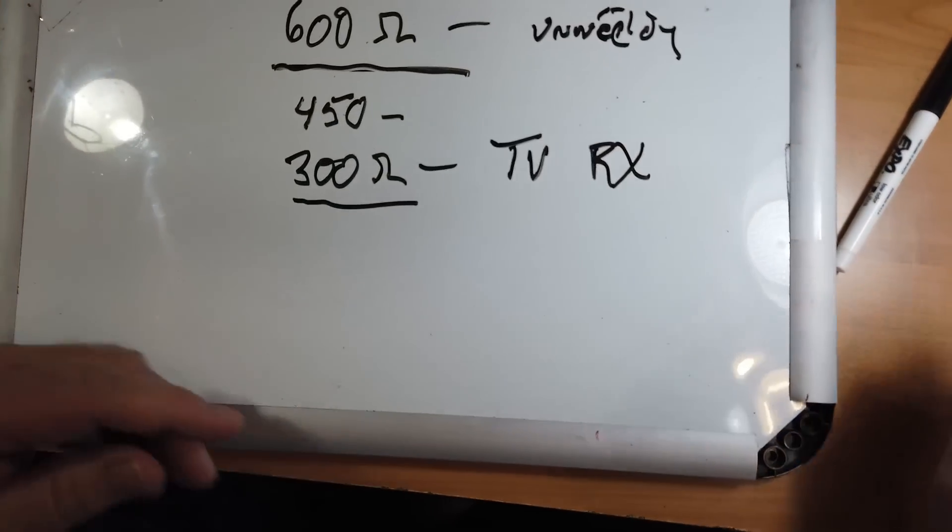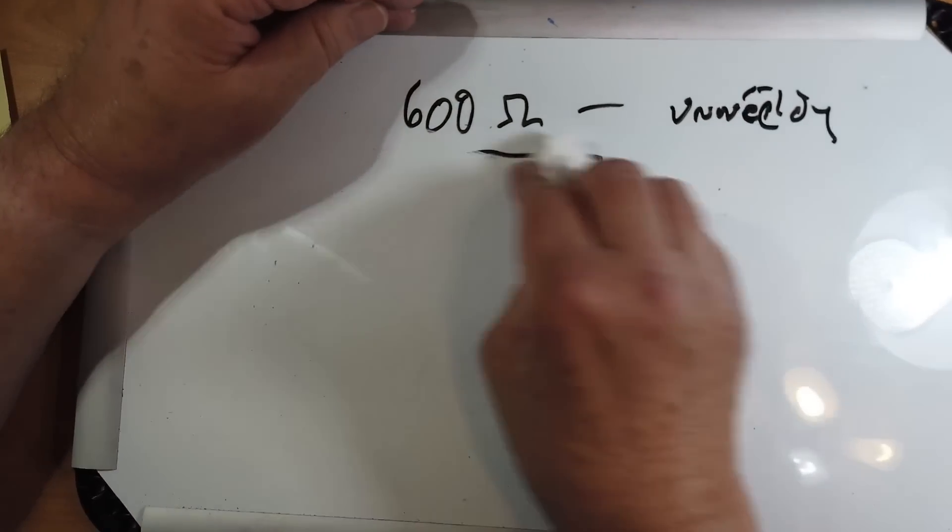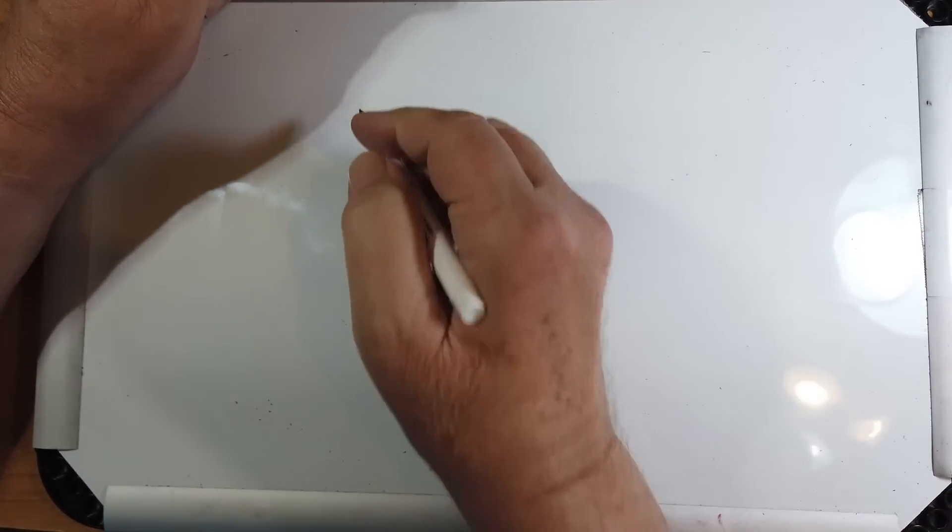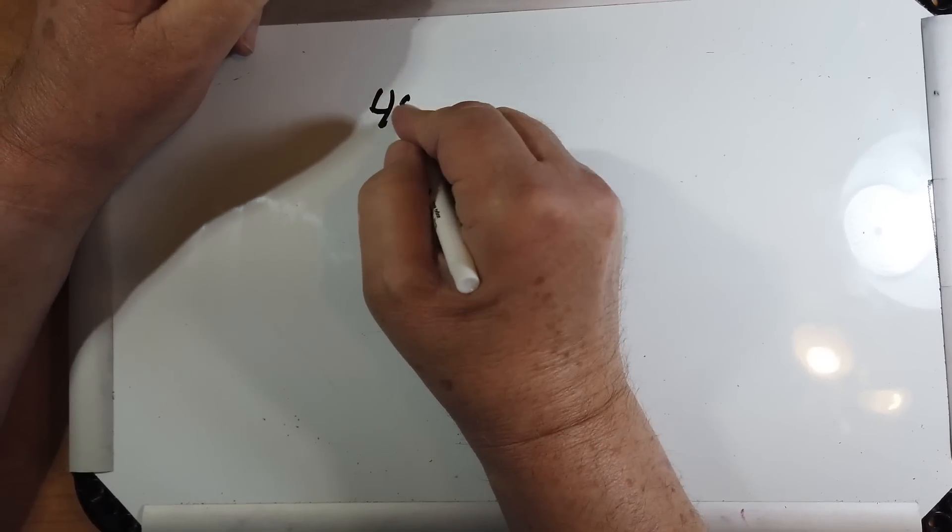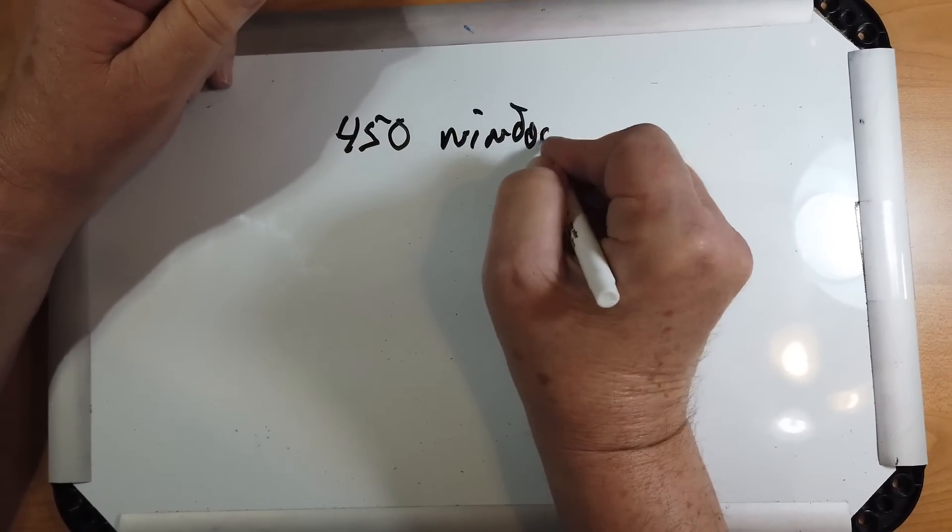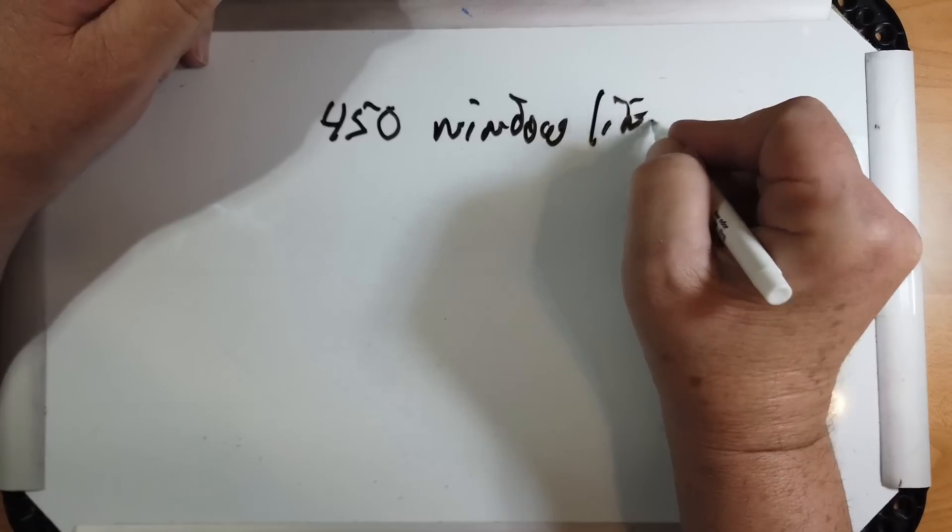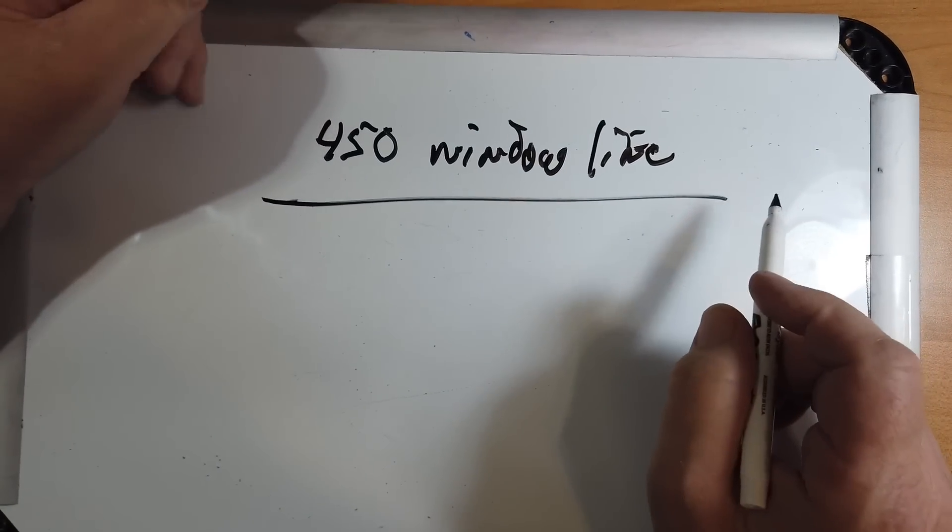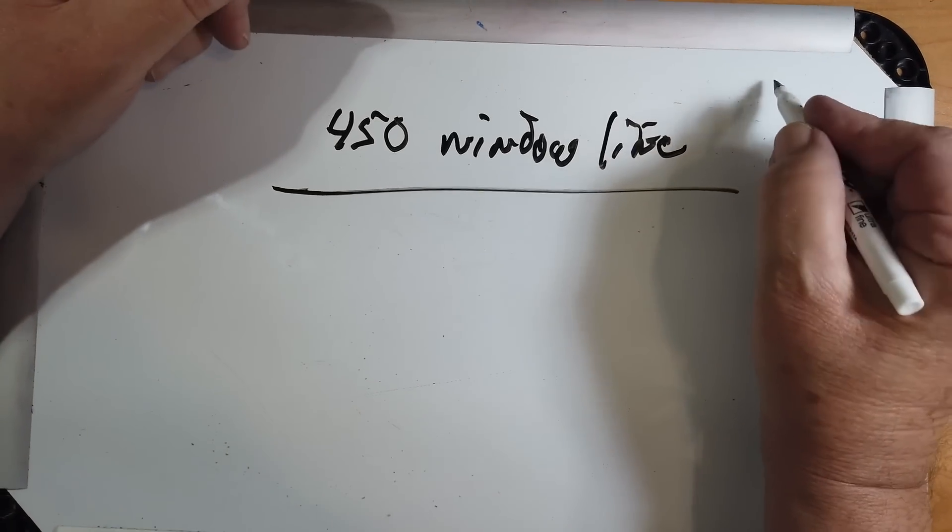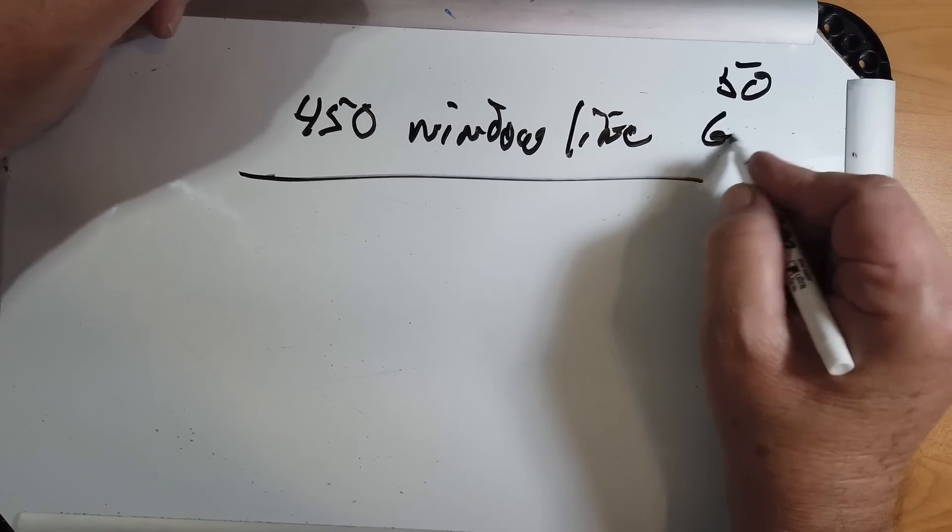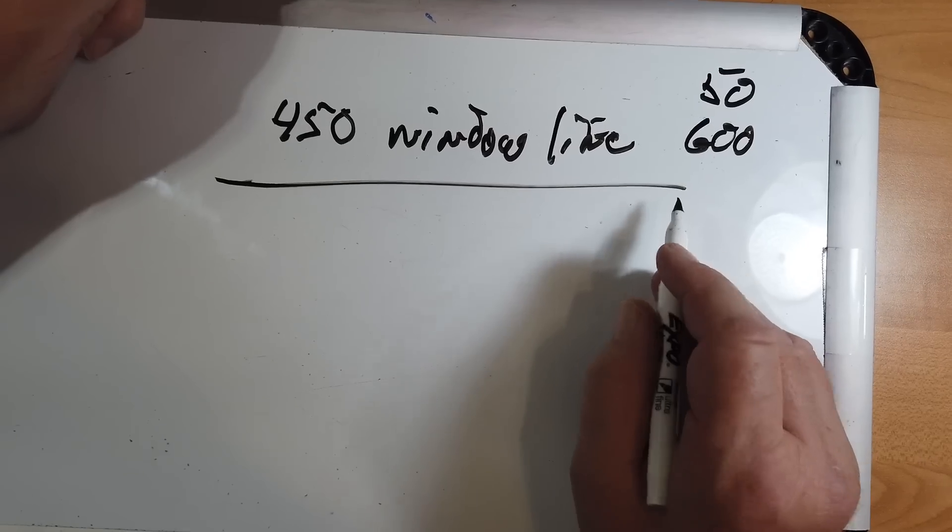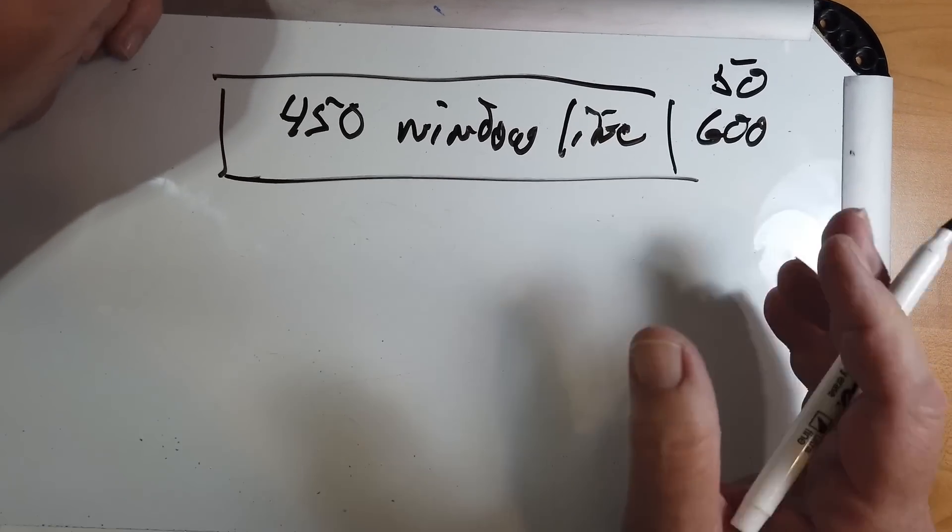Now, why 450? Well, you've got a chicken and egg problem here. It's 450 because it's been 450. 450 ohm window line actually entered amateur radio within my lifetime. When I first came into amateur radio, you had 50 ohm coax and 600 ohm open wire line. 450 ohm came out as kind of a broad twin lead.